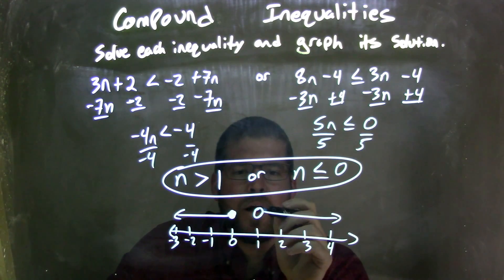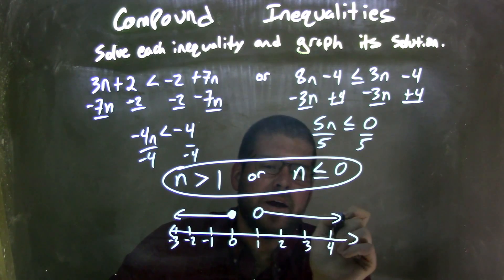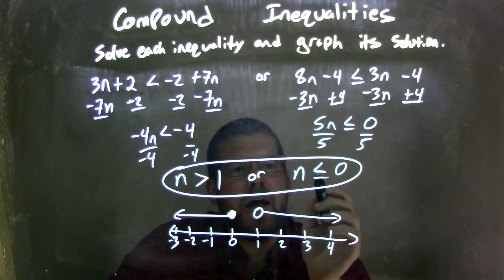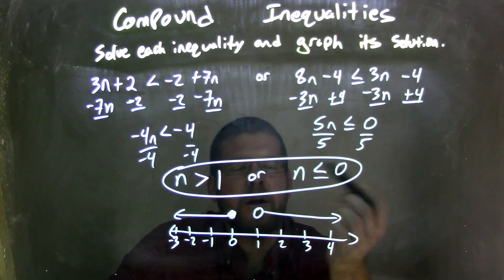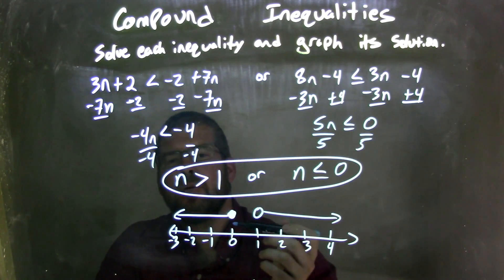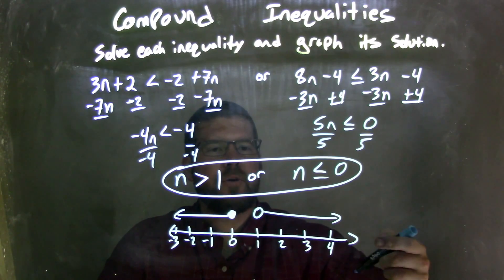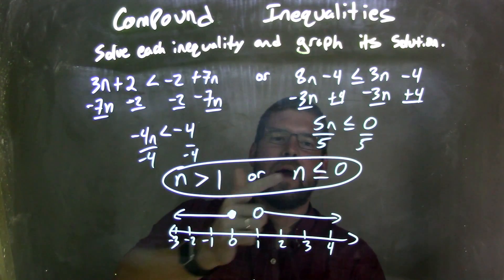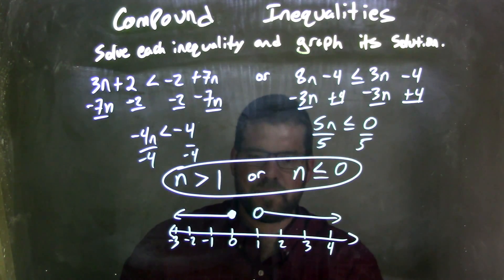Since n is not equal to 1, I have an open circle there and shaded to the right because n is greater than 1. For the second, n can equal 0 so I have a closed circle there, and n is less than 0 so my arrow points to the left. My graph matches my final answer: n is greater than 1, or n is less than or equal to 0.